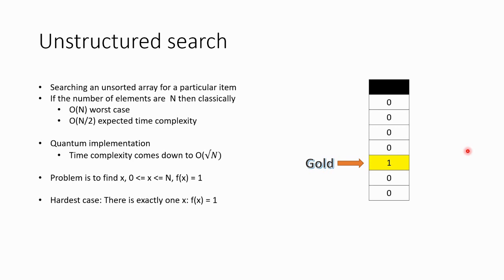There is an array and a function f(x) which looks into this array. If I give an element number — say f(0), it will say 0; f(1) will say 0; f(2) will say 0. But if I give f(4) it will say 1. So when I get f(4) = 1, I know the fourth location is where we have the gold. So we are trying to find the gold.